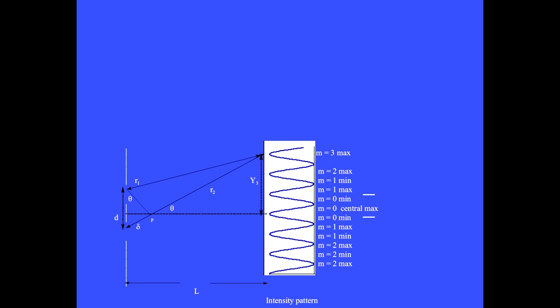Above that, and also below that, is the m equals 1 minimum, where the path difference is 1 half wavelength. Next are the m equal 1 maximums, which occur where the path difference is equal to 1 full wavelength.